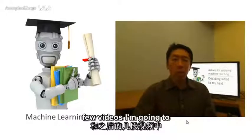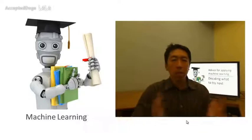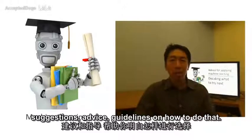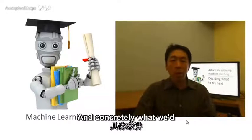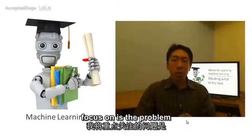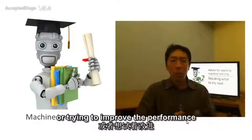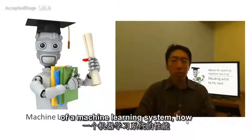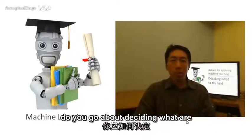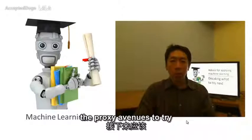And in this and the next few videos, I'm going to give a number of practical suggestions, advice, guidelines on how to do that. And concretely, what I'm going to focus on is the problem of, suppose you are developing a machine learning system or trying to improve the performance of a machine learning system. How do you go about deciding what are the promising avenues to try next?